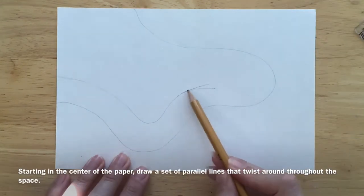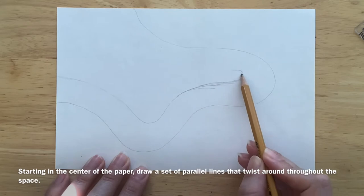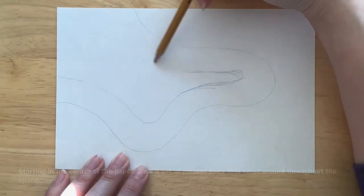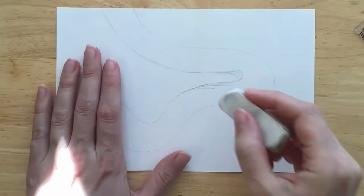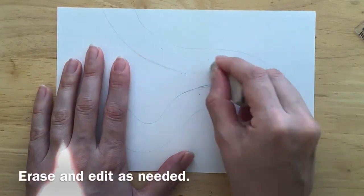Starting in the center of the paper, draw a set of parallel lines that twist around throughout the space. Erase and edit as needed.